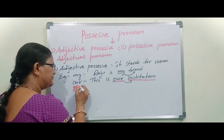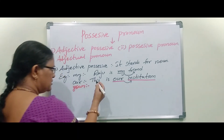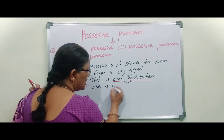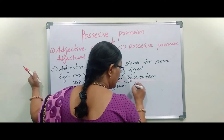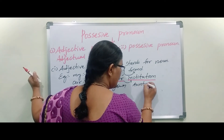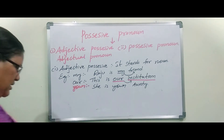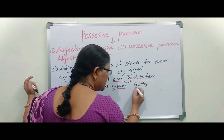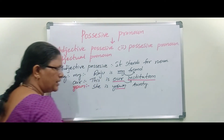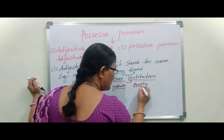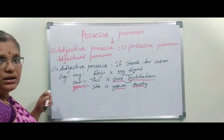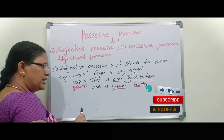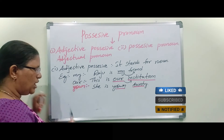Next: 'your.' She is your auntie. Here, 'your' is talking about 'auntie.' Auntie is a common noun, so 'your' is talking about a common noun. That's why this is called an Adjectual Pronoun.